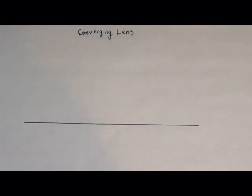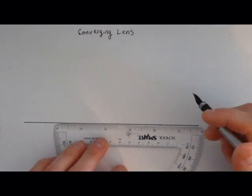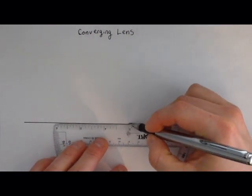So for converging lens, I've already drawn a nice optical axis. You can see here. Now we need to put our lens on this axis somewhere, kind of in the middle to give us some room to work.